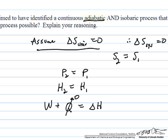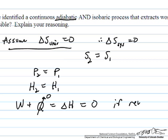Q is zero because this is an adiabatic process as defined in the problem statement. And so the work is equal to delta H. And that's equal to zero for a reversible process.